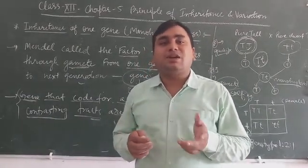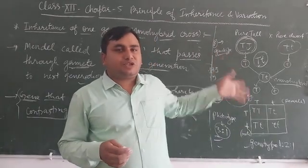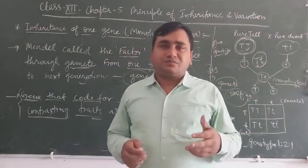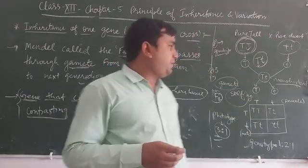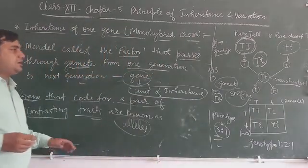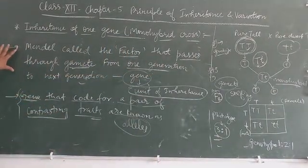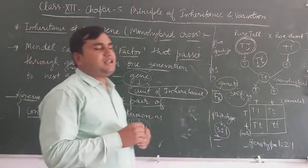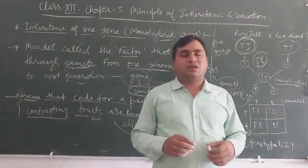So this is about the monohybrid cross or inheritance of one gene that represents the genotypic and phenotypic characters of the organism. Simply Mendel used the pea plant. This shows the characters of the pea plants by their gamete formation. And tomorrow I will tell the next topic, test cross. Thank you.